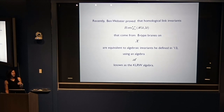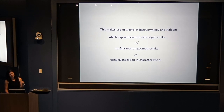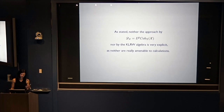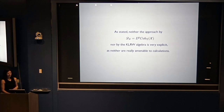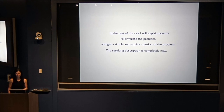Recently, Ben Webster proved that homological linking invariants coming from B-type branes on these monopole moduli spaces are equivalent to algebraic invariants he defined in 2013 using an algebra — or more precisely a version of it — known as the KLRW algebra after Khovanov, Lauda, Rouquier, and Webster. This makes use of works of Bezrukavnikov and Kaledin, which explain how to relate algebras like the KLRW algebra to categories of B-branes on geometries like X, but this requires quantization in characteristic p. Neither the approach by B-type branes on monopole moduli spaces nor the KLRW algebra is very explicit — in fact, neither is amenable to any calculation at all. In the rest of the talk, I'll explain how to reformulate the problem and get a simple and explicit solution.